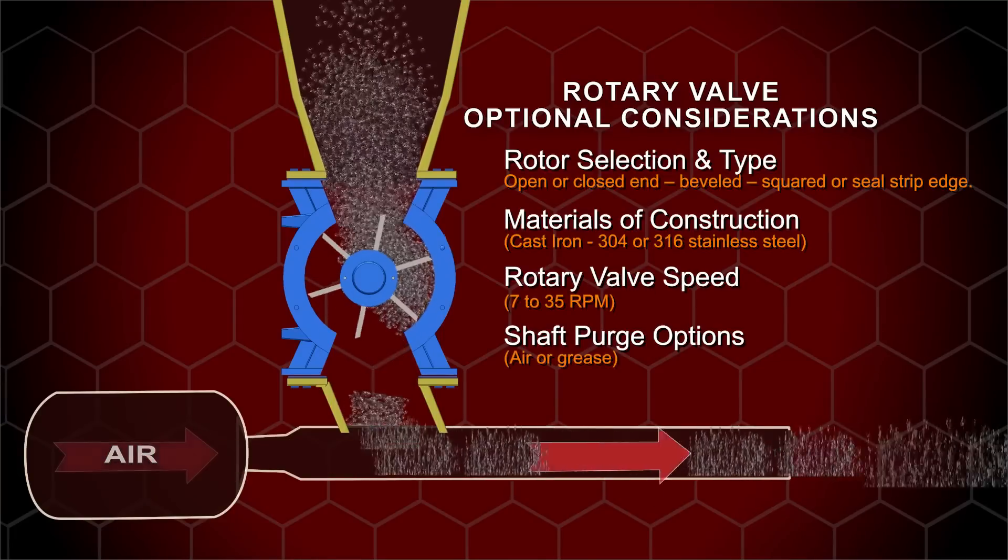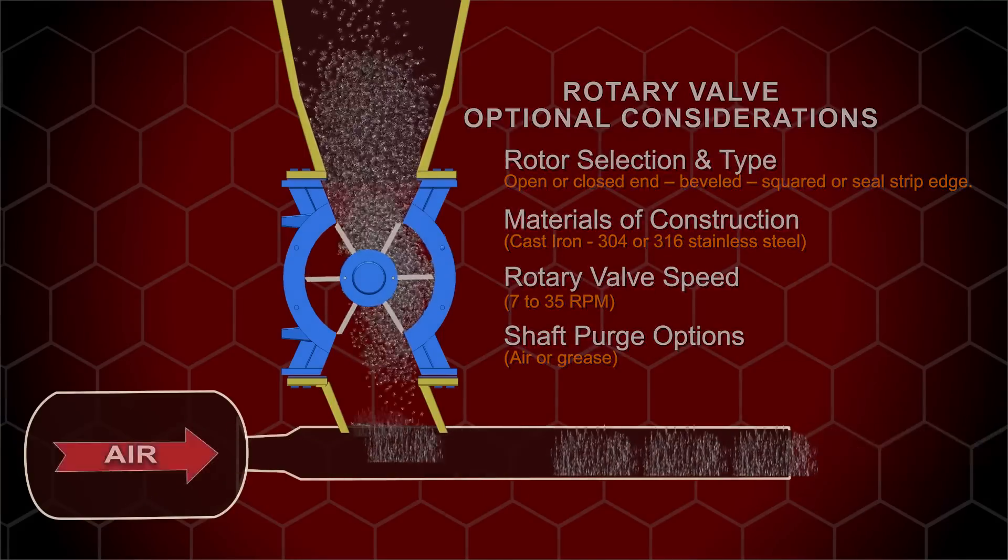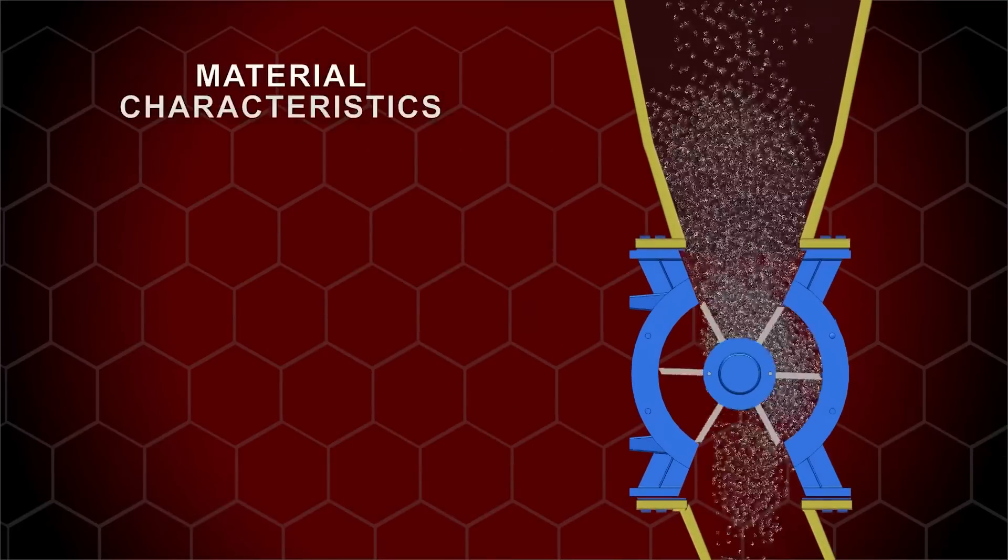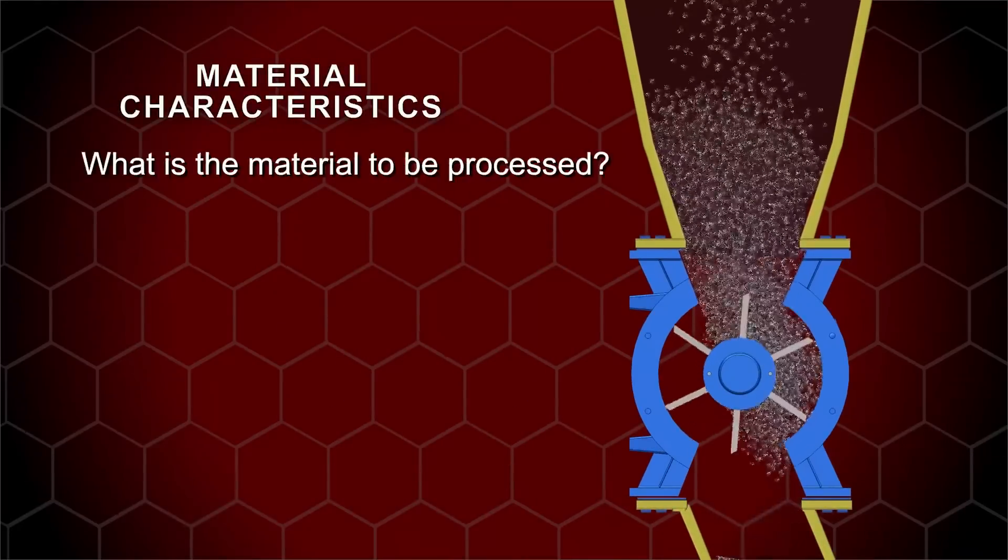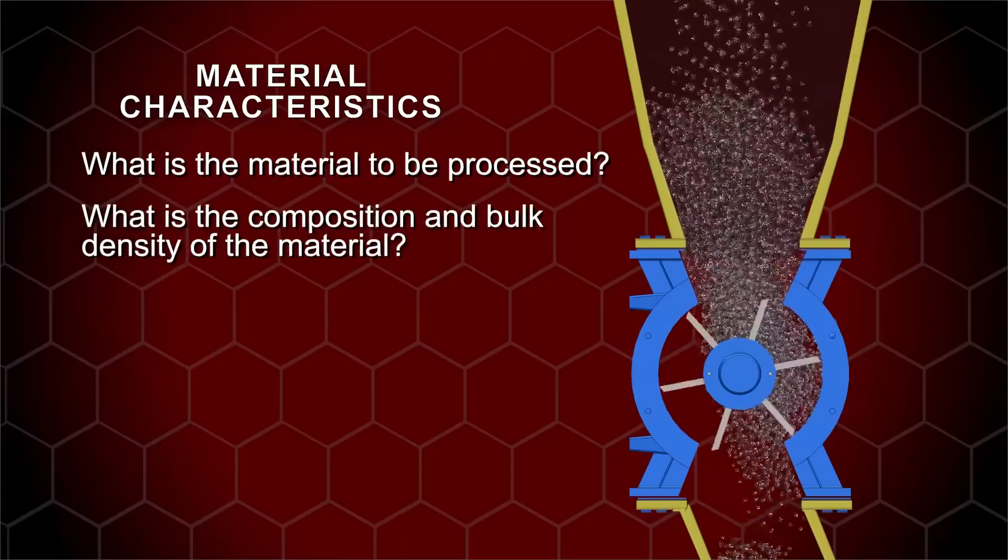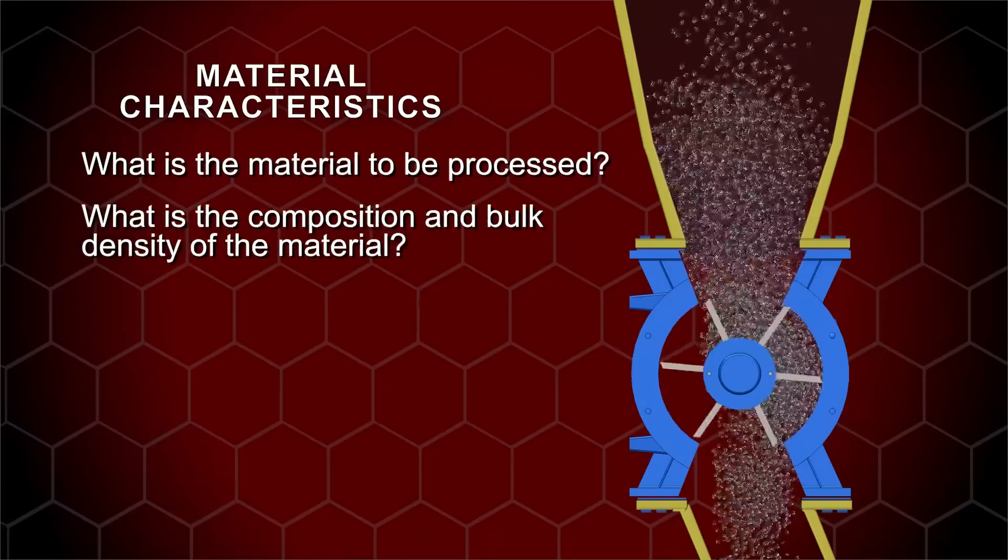To ensure that your rotary valve operates smoothly, these material characteristics are a critical aspect. First, what is the material to be processed? What is the composition and bulk density of the material? What temperature will the valve be operating under?